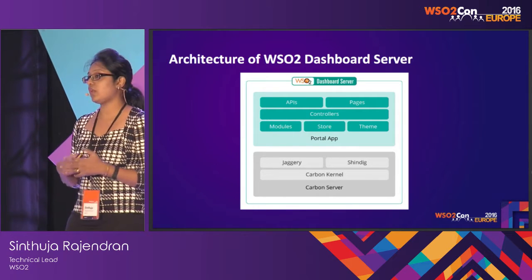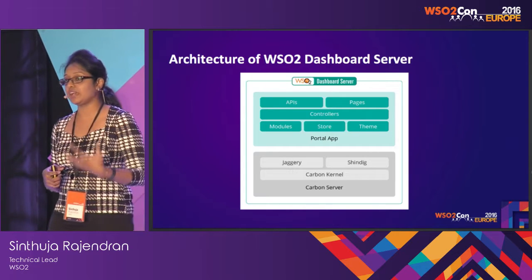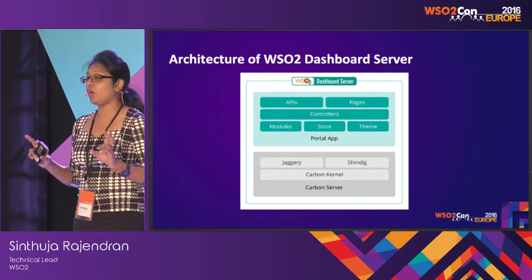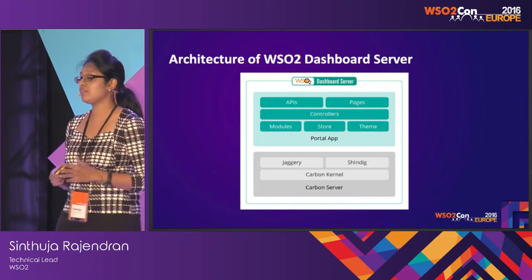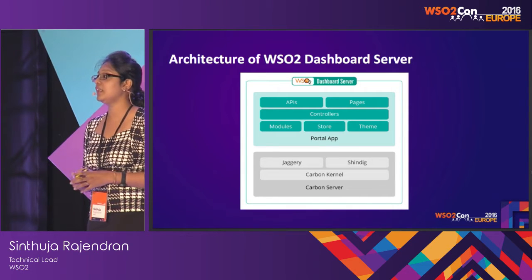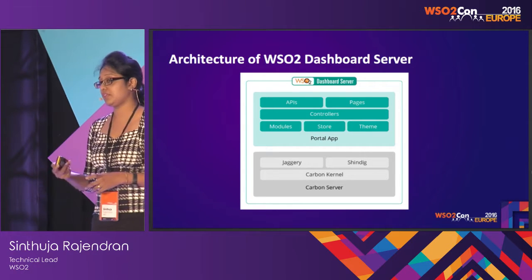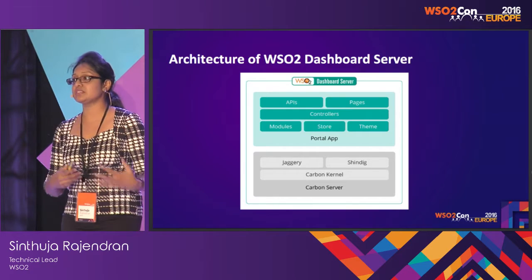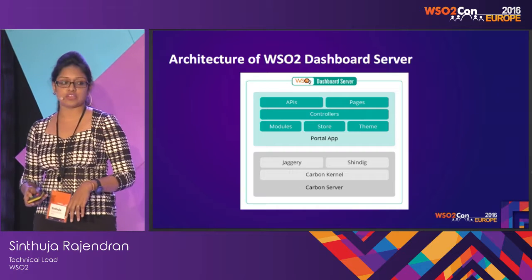As with other WSO2 products, the architecture has the WSO2 kernel. We are mainly using Jaggery, which is a server-side JavaScript language, to build our portal application. On top of the portal application, all the logic is handled. We have modules, tools, and tenants to cater to different teams and provide additional features like SSO with modules. The store is basically where we keep our resources such as assets, gadgets, layouts, and so forth. This is the basic architecture of WSO2 Dashboard Server.